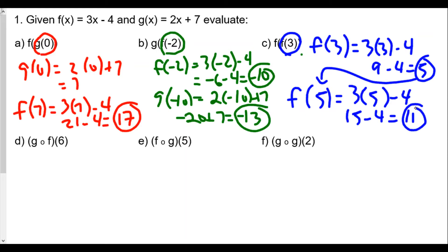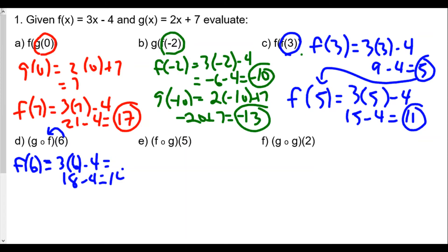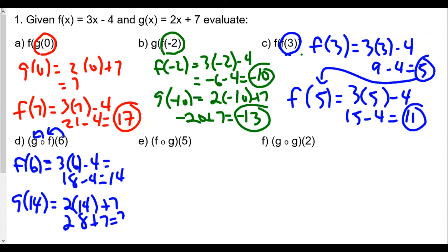With notation like f of g of 0, g of f of negative 2, and f of f of 3, it means the inside function value becomes input for the outside function. For part d, g of f of 6: we plug 6 into f first, going right to left. So f of 6 is 3 times 6 minus 4, or 18 minus 4, which is 14. Then we take g of 14, which is 2 times 14 plus 7, so 28 plus 7 equals 35.